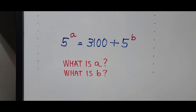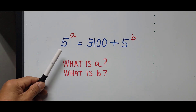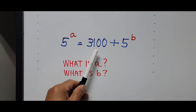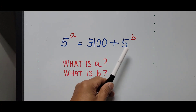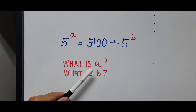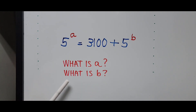Welcome to Casciano Easy Math. This video is about solving another exponential equation: 5 raised to A equals 3100 plus 5 raised to B. The question is, what is the value of A and what is the value of B?